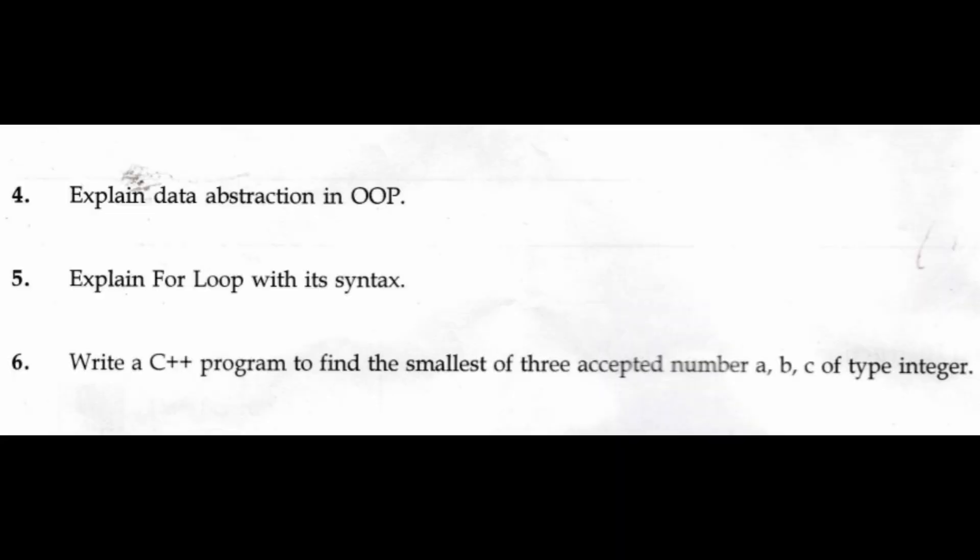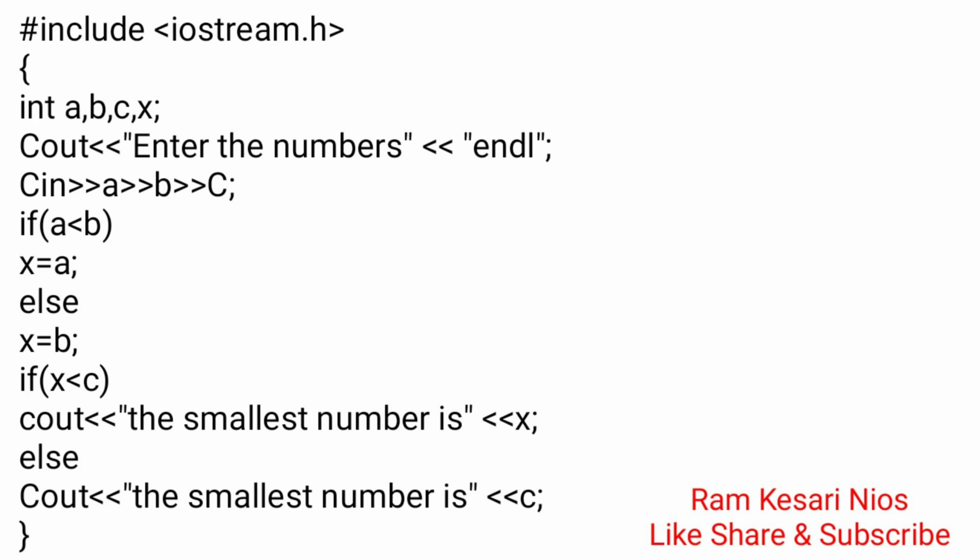Question 6: Write a C++ program to find the smallest of three accepted numbers a, b, c of type integer. #include<iostream.h> int a, b, c, x; main() { enter the numbers; cin >> a >> b >> c; if(a < b) x = a; else x = b; if(x < c) cout << "the smallest number is" << x; else cout << "the smallest number is" << c; } Note: there is part marking in every program of C++ and HTML. Header file has one mark and body has one mark.